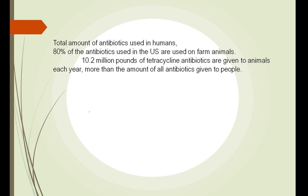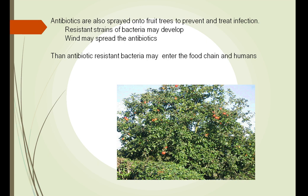80% of the antibiotics used in the U.S. are used on farm animals — that's 10.2 million pounds given to animals every year, much more than is given to people. The potential for abuse is high among farmers. Antibiotics are sprayed into fruit trees, and since they're sprayed indiscriminately into the air, they are carried to other places. If not washed off the fruit, they may enter our system and cause us to develop resistance.